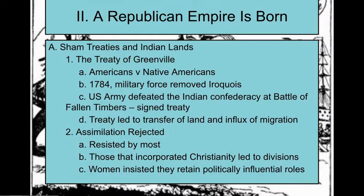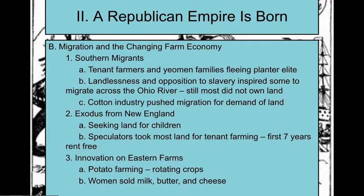Out West, we're going to have the Treaty of Greenville — a skirmish with a Native American Indian Confederacy. We dominate them, they sign a treaty and give us land. Plantations are making lots of money and want more land in the South, pushing poor farmers to move west across the Ohio River. On the Eastern Front, the eldest inheriting all the land means younger sons also head west — creating more problems with the Native population.